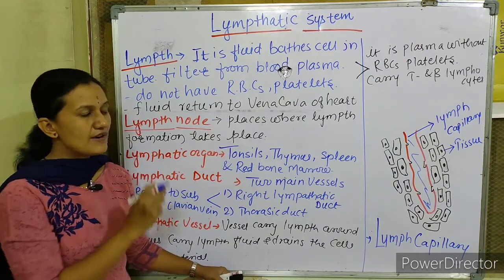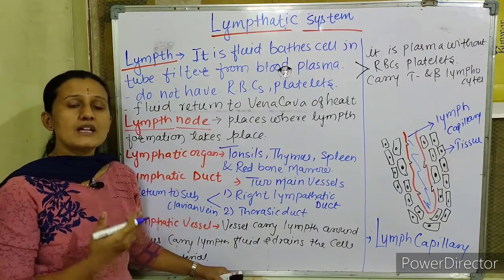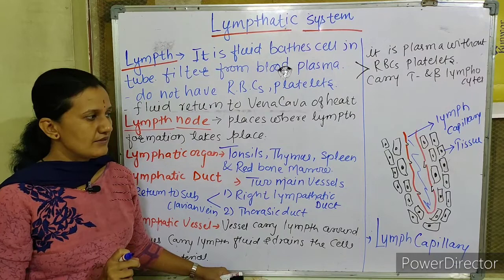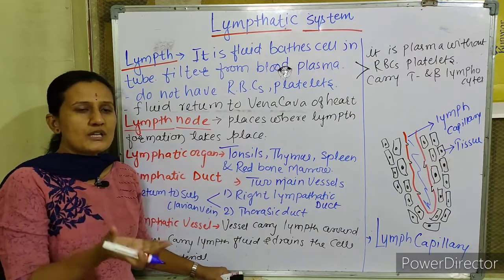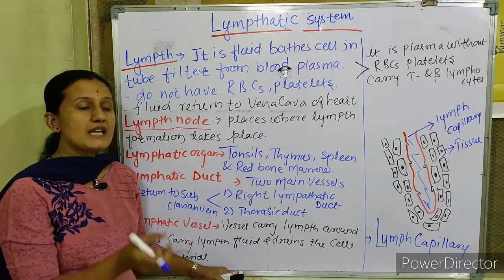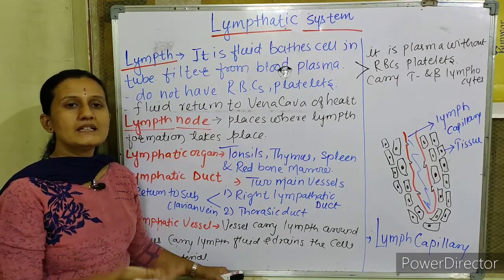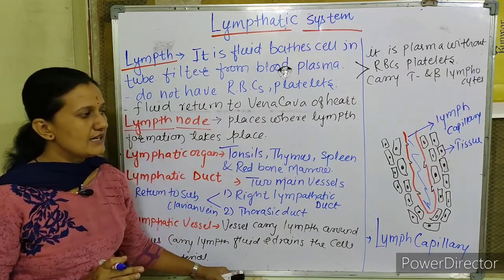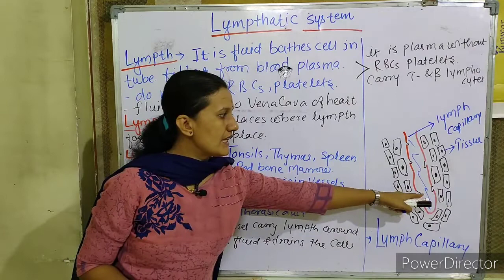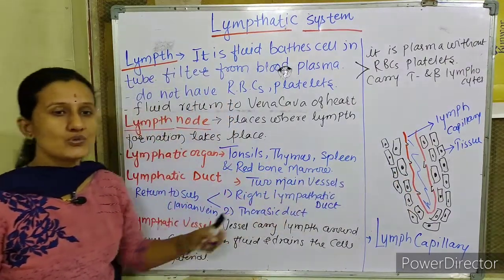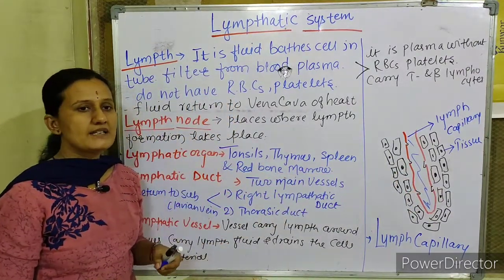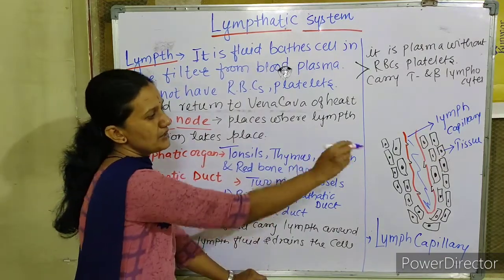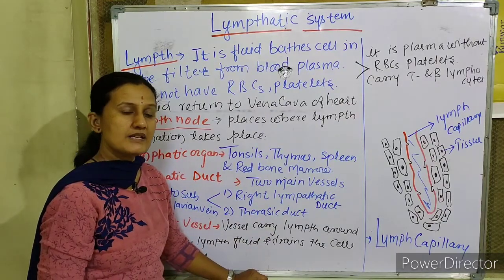The lymphatic vessels are somewhat larger than blood vessels. When the osmotic pressure outside the lymphatic capillary becomes lower than the lymph fluid pressure, these pores open and fluid drains into the tissues. The lymphatic capillary absorbs waste material from the cell and gives some important material to the cell, then returns to the lymphatic capillaries.